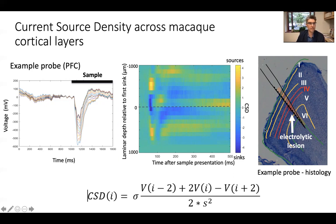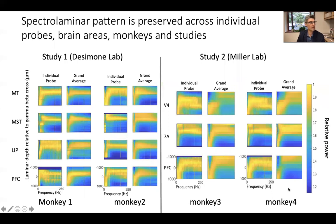Preliminary histological analyses suggest a spatial relationship between the spectral laminar and CSD patterns — both align to layer four. Visual inspection of the spectral laminar power spectra confirmed that across the dataset, this swoosh-like pattern was preserved. Relative power in the gamma and theta bands was higher in superficial layers relative to deep layers, and in the alpha band there was higher power in deep layers. This pattern could be readily observed within individual example probes and also held in each monkey, area, and study.